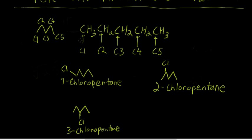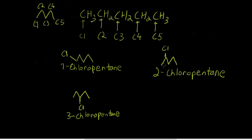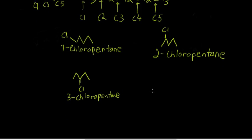Remember, chlorination at C1 is the same as at C5 — that's why there's no 5-chloropentane, because that would be the same as 1-chloropentane. Similarly, chlorination at C2 is the same as at C4, so 4-chloropentane is the same as 2-chloropentane. These are the 3 possible monochlorination products, assuming radical chlorination happens only once.